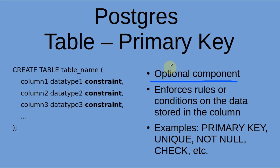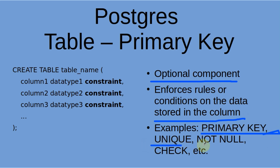Constraints are used to enforce rules or conditions on the data stored in that column. A few examples of these are primary keys, unique, not null, check, et cetera.